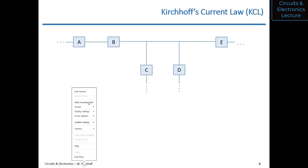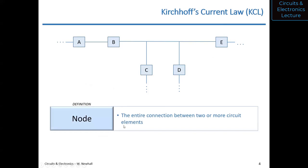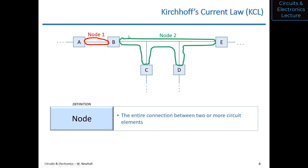To talk about KCL, I need to define what a node is. A node is the entire connection between two or more circuit elements — not just one point, but the whole conductor that connects circuit elements together. Here's node one, and here's node two — it's the whole connection, which I've circled here in green.